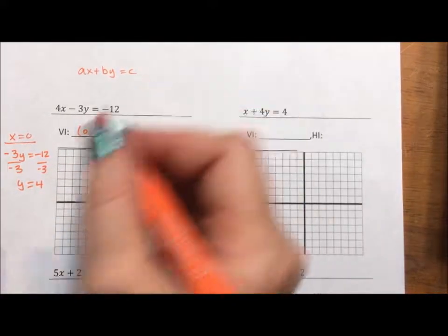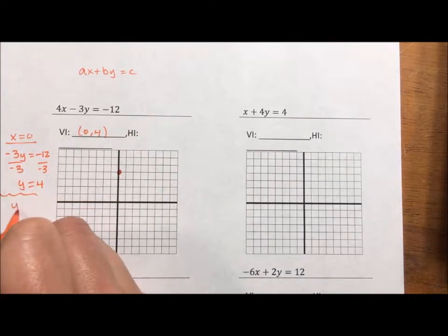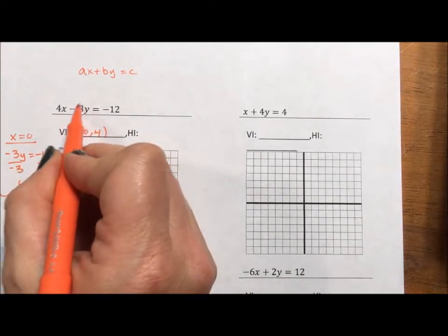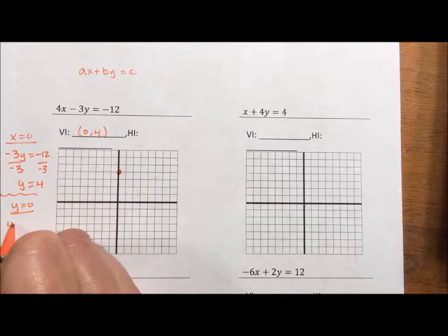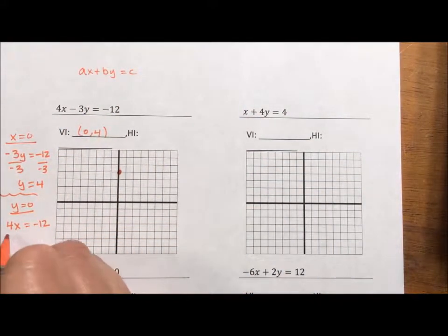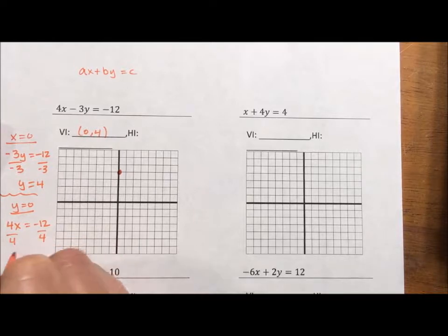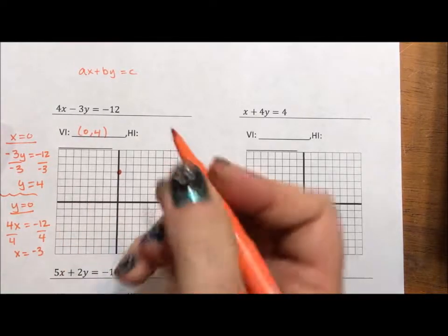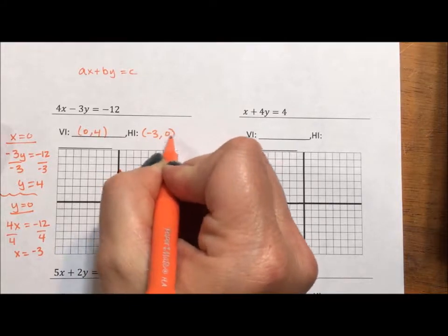But wait, what if y is 0? If y is 0, we're putting in 0 for y. I get 4x. I don't need to write a 0 term. Equals negative 12. Divide by that 4 and x is equal to negative 3. So my horizontal intercept is negative 3, 0.